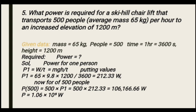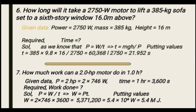Putting in values: m is 56 kg, g is 9.8 (newly written), height is 1200 m, time is 3600 s. Calculating for one person gives approximately 183.7 watts per person. For 50 people, multiply by 50, giving total power. The answer in scientific notation is approximately 1.06 × 10 to the power 5 watts.